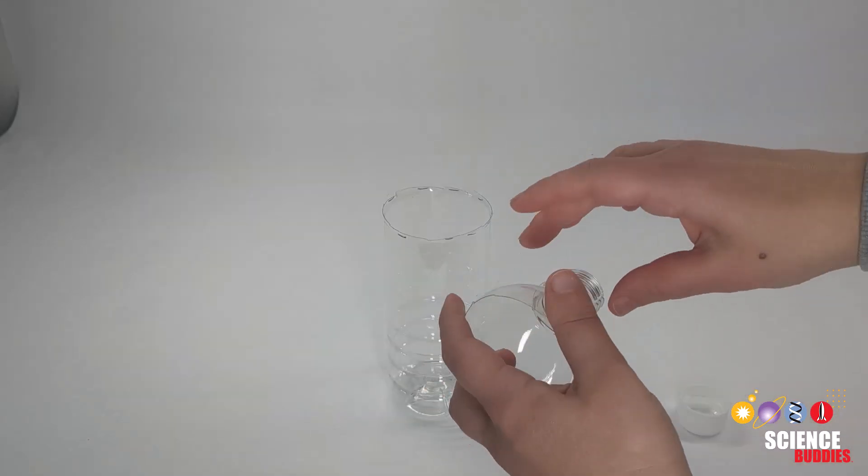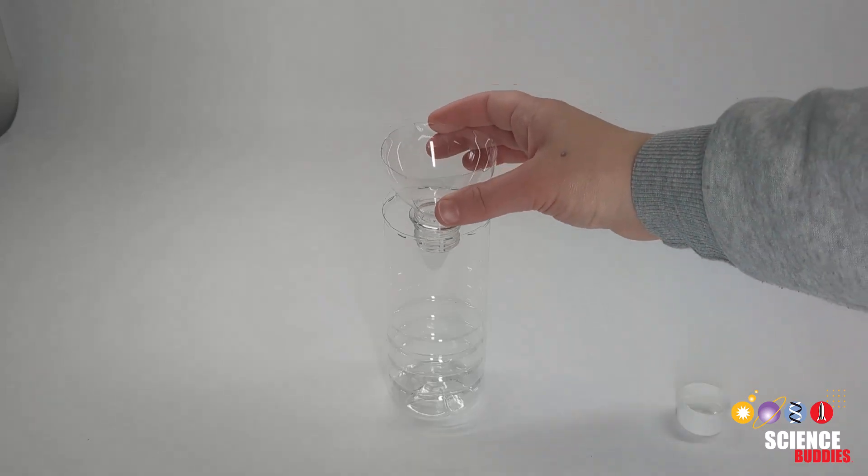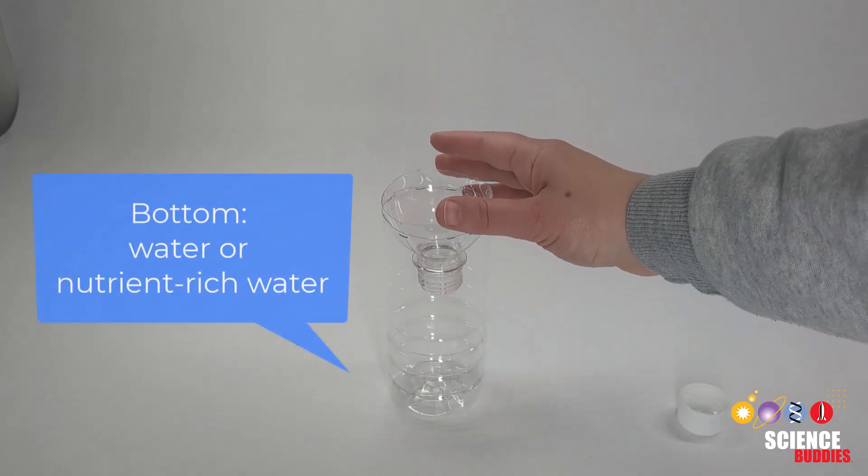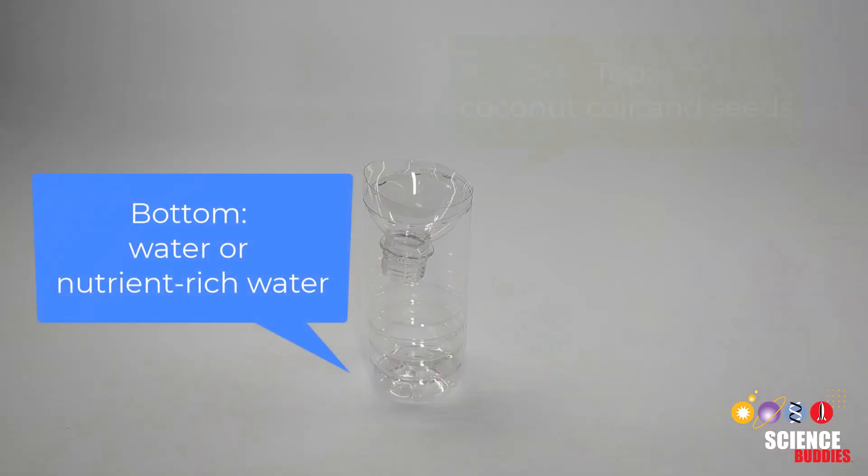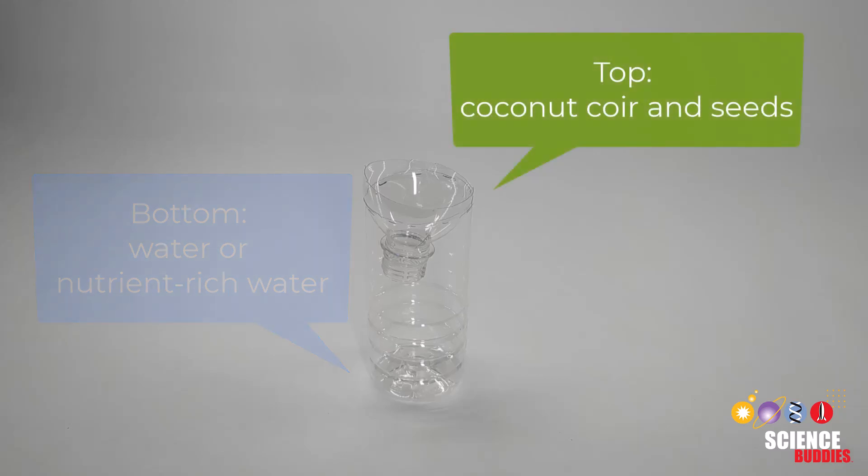Invert the top placing the opening downward into the bottom half of the bottle. The bottom half will hold the water or nutrient-rich water while the top will hold the coconut core and seeds to grow the plants.